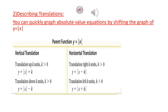Vertical Translation. Translation up K units: Y equal absolute value of X plus K. Translation down K units (K positive): Y equal absolute value of X minus K.